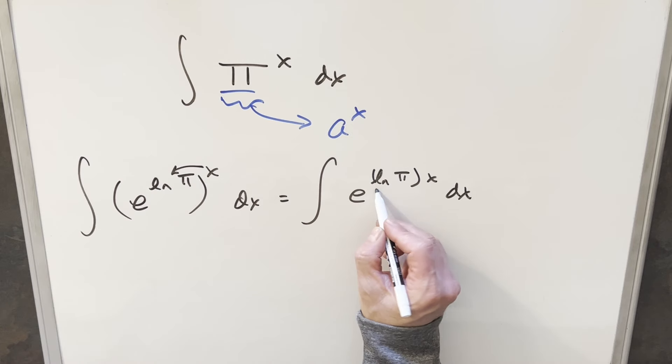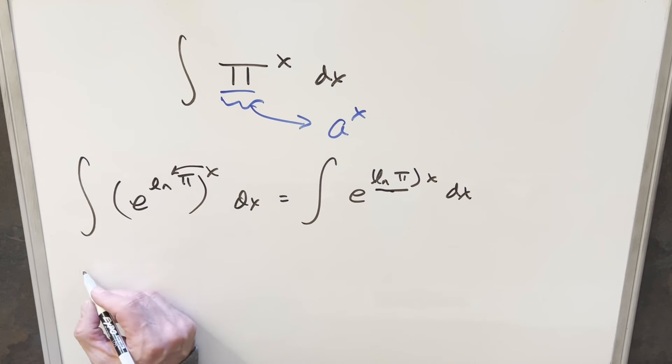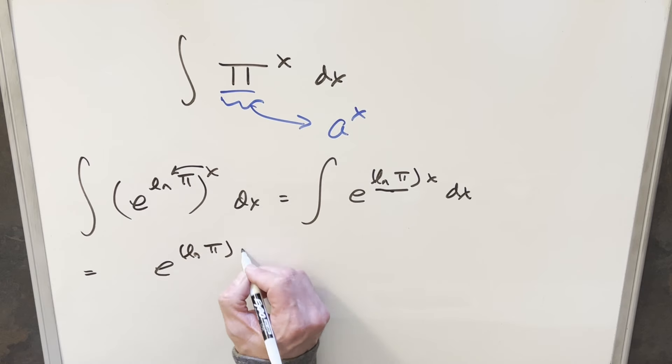But then this is just an easy integral. We just have a constant in front of the x. So when we integrate this, we just end up with e ln pi x. But then we need to bring out the ln pi in the denominator. So we write it as ln pi here.